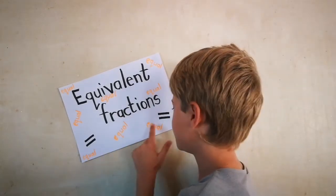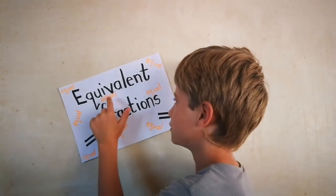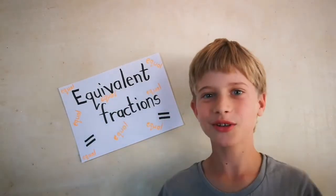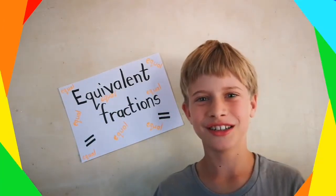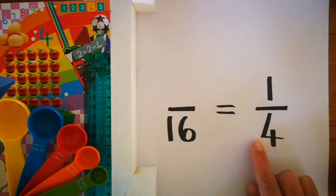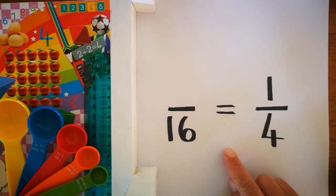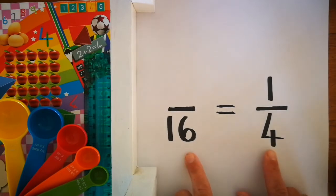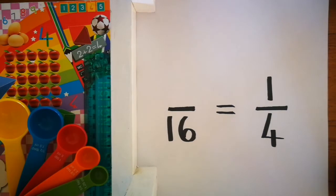Equal, equal, equal — they all equal! In this problem, the top numbers are not giving us any clues, but the bottom numbers, the denominators, are helping us to solve the problem.